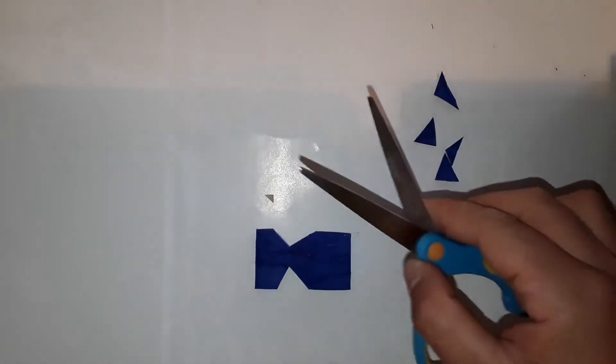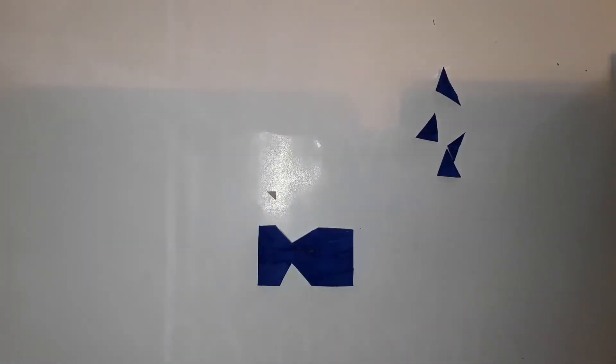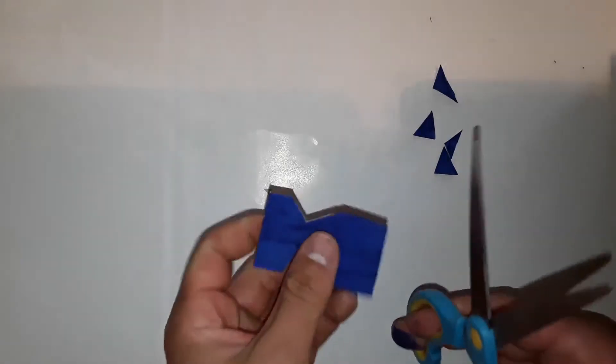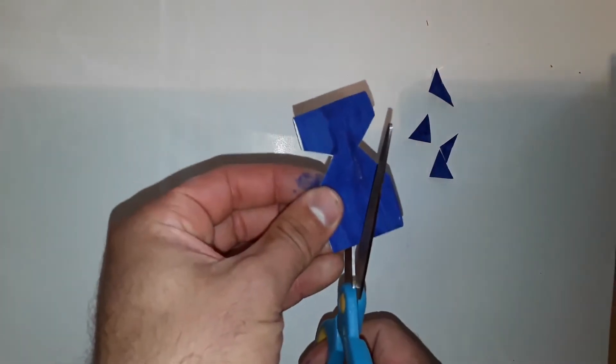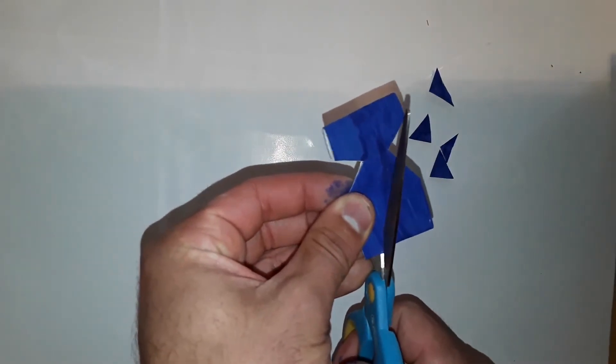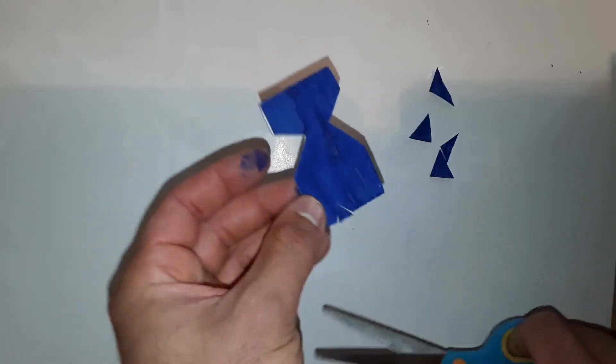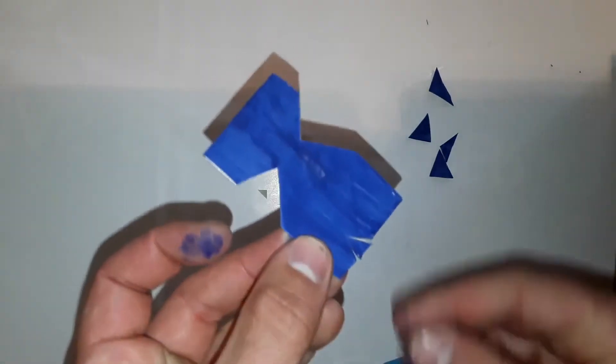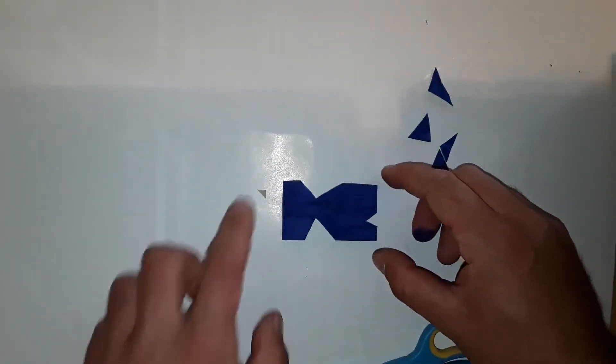But we're not done with cutting yet. Now we'll also cut the mouth. For this, you also cut a small triangle down here.